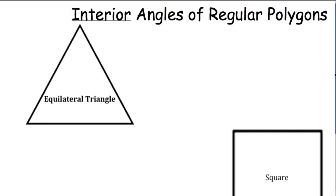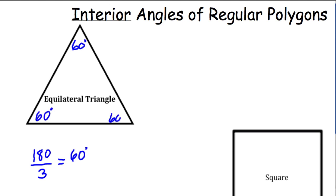Going back to the beginning, let's talk about an equilateral triangle. An equilateral triangle adds up to 180 degrees. If we take 180 degrees and divide it by three because there are three angles, we get 60 degrees. An equilateral triangle has each angle being 60 degrees because they all have to be the same measurement since all of the sides are the same length.